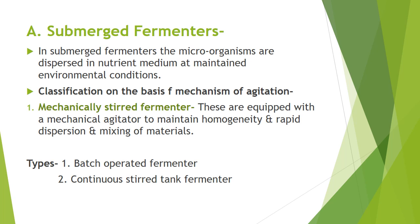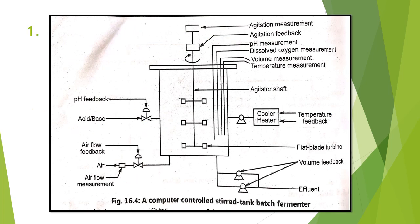Mechanically stirred fermenters include stirred tank fermenters, multistage fermenters, paddle wheeled reactors, and stirred roof reactors. These mechanically stirred fermenters are further divided into two types: batch operated fermenter and continuous stirred tank fermenter. The stirred tank fermenter is mostly applicable in the fermentation industry for batch processes. The main advantage of this fermenter is flexibility in design, and it is used in the range of 1 litre to 100 ton capacity sizes.